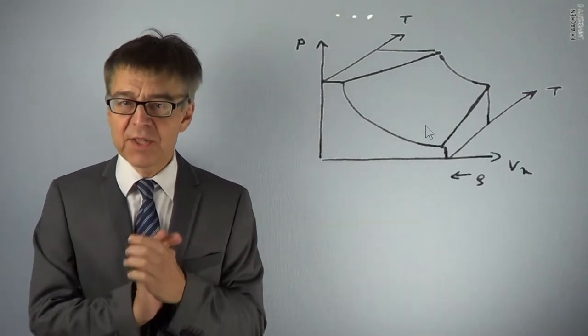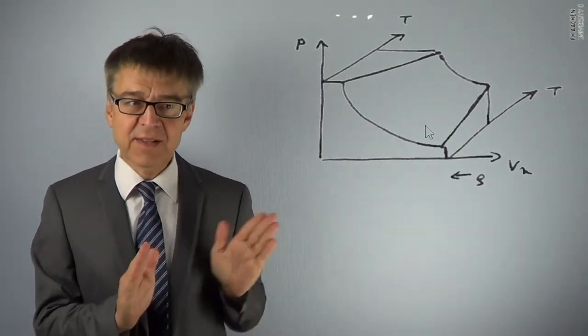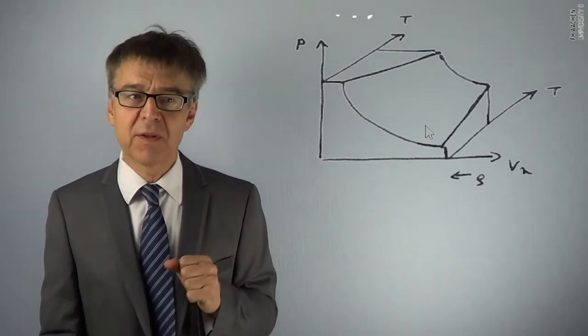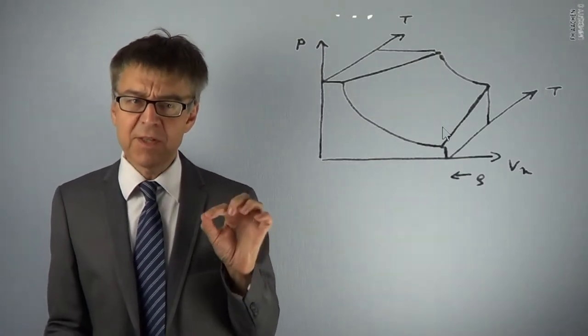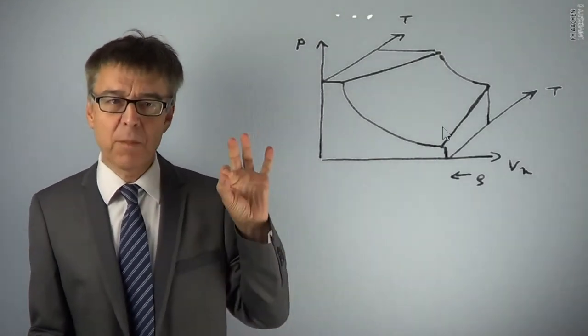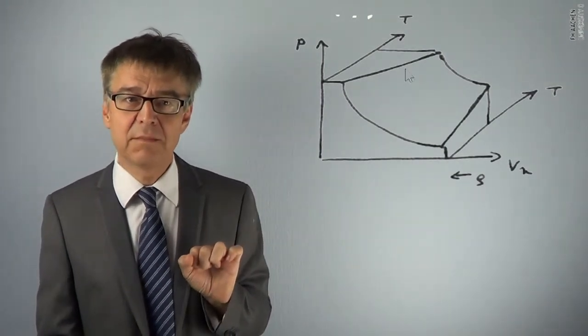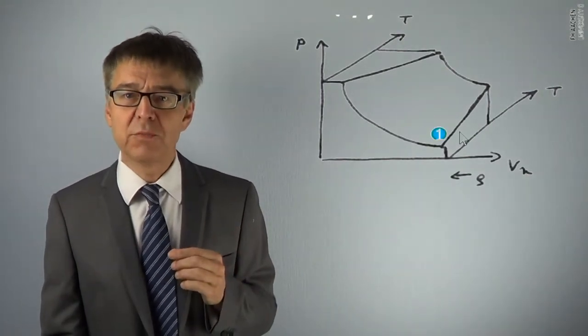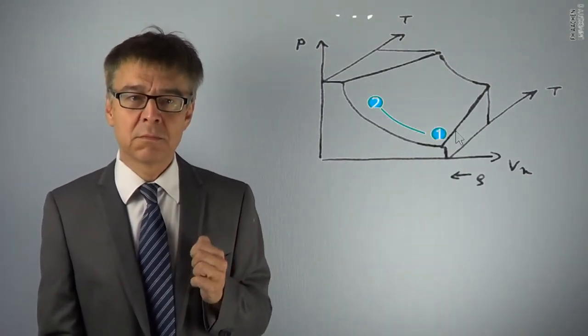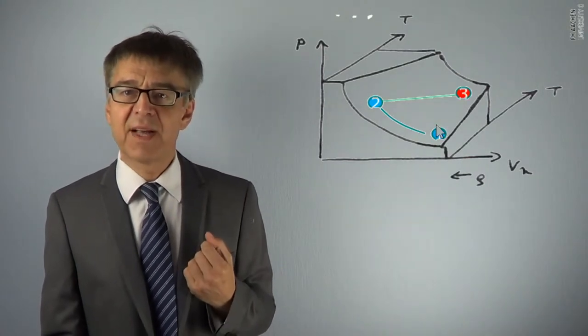I can plot these and other states of the one component system into a diagram. We choose a PVT diagram. The axis of the three-dimensional diagram corresponds to the three state variables pressure, temperature and molar volume. Every state corresponds to a point in this diagram.